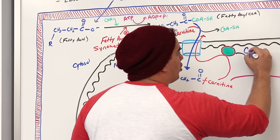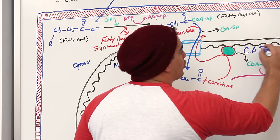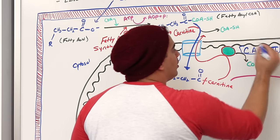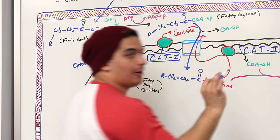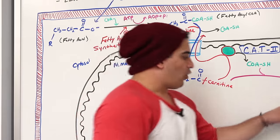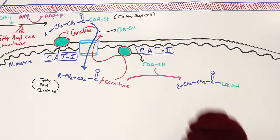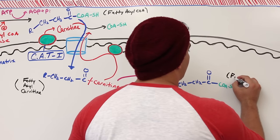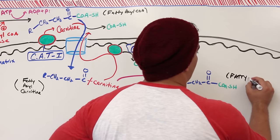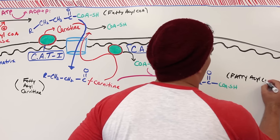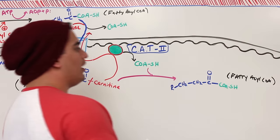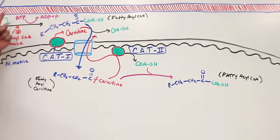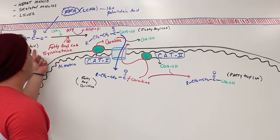Once in the mitochondrial matrix, to prevent it from getting back out, an enzyme rips the carnitine off, pushes it back into the cytosol via the translocase, and adds on a coenzyme A. This enzyme is called carnitine acyl transferase type 2, or carnitine palmitoyl transferase type 2 (CAT2/CPT2). We've now formed a fatty acyl CoA inside the mitochondria.